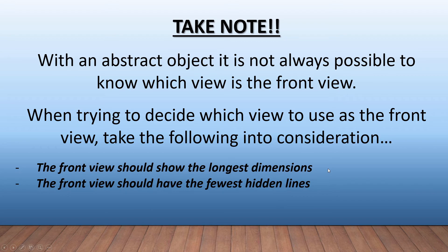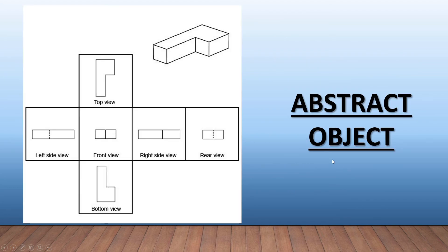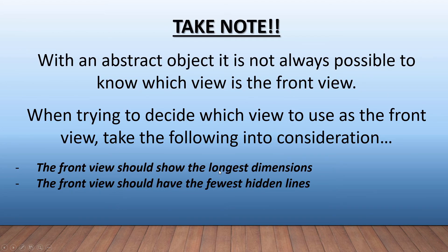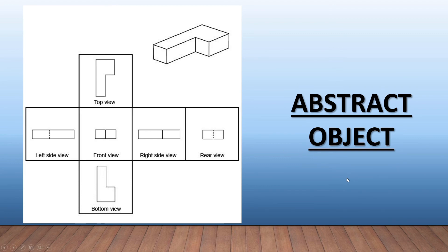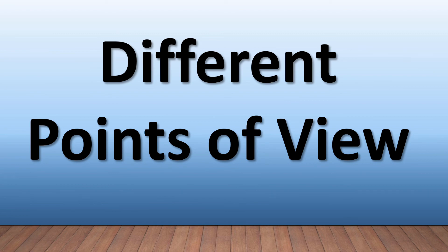Lastly, with an abstract object it is not always possible to know which view is the front view. When trying to decide, please take the following two points into consideration: the front view should show the longest dimensions, and the front view should also have the fewest hidden lines. Here we have an example of an abstract object viewed from the top, left, side, rear, and bottom — and the front view shows the longest dimensions and fewest hidden lines. And that is how we check out different points of view on various objects and drawings.